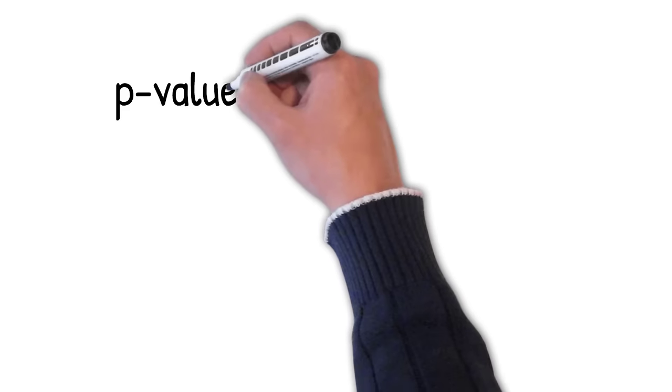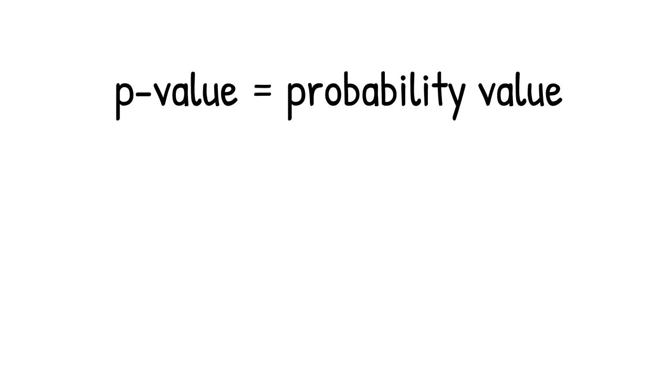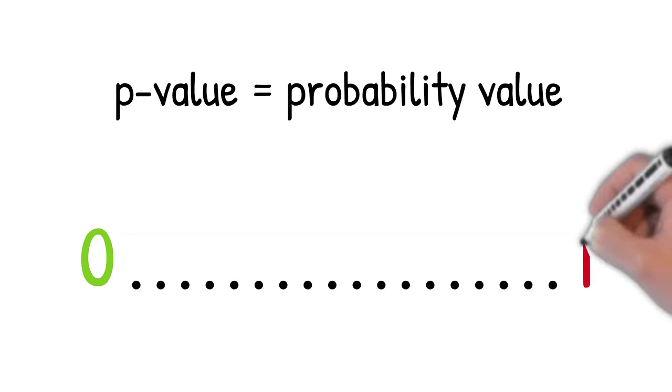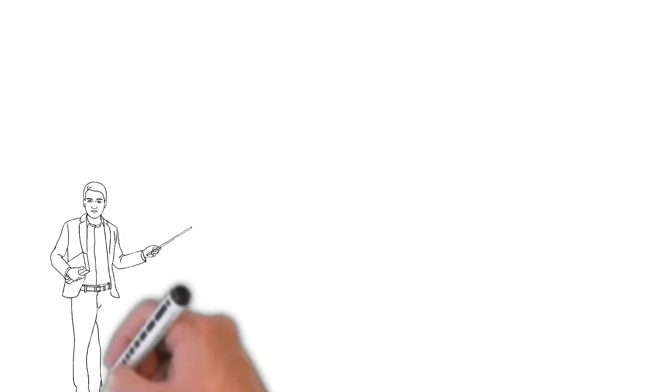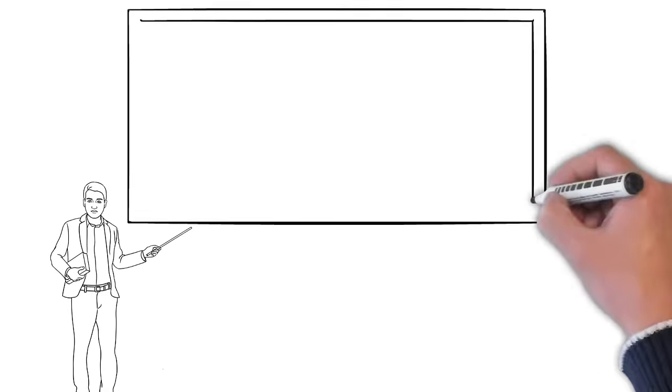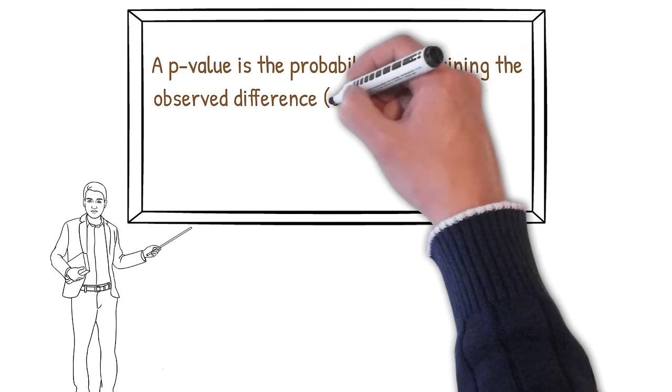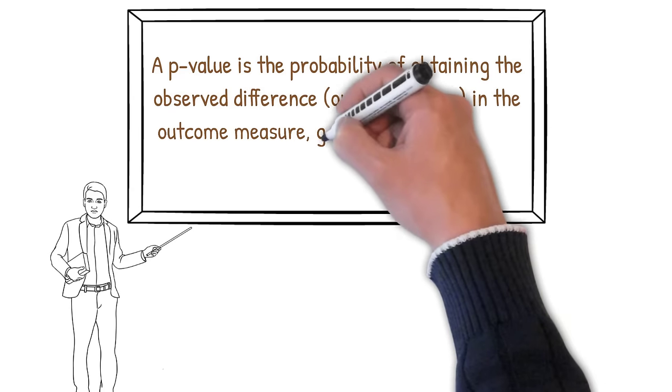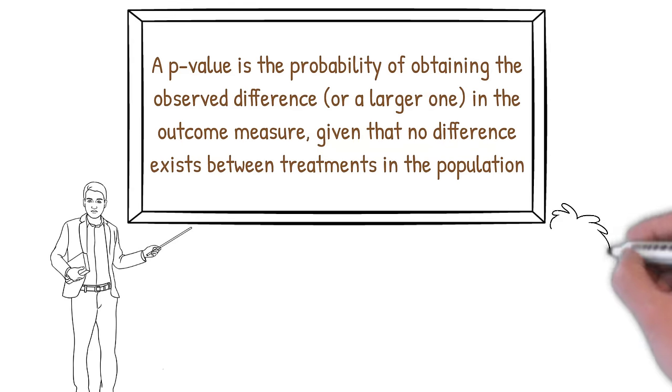A p-value is an abbreviation of a probability value, and the p-value is a number that can be any value between 0 and 1. But what exactly does this number represent? The official definition of a p-value is quite difficult to understand. A p-value is the probability of obtaining the observed difference or a larger one in the outcome measure given that no difference exists between treatments in the population.